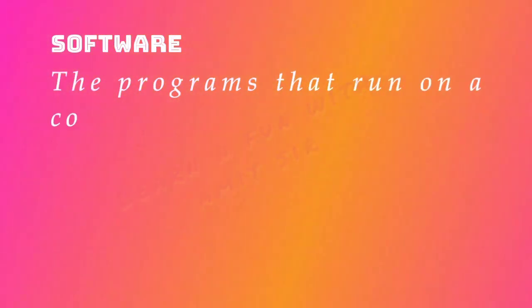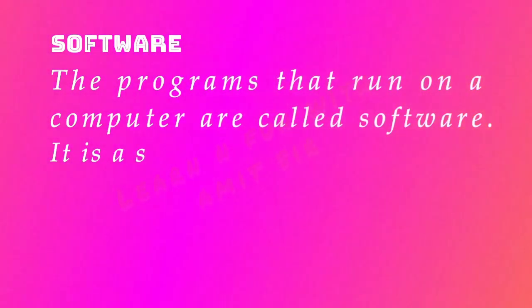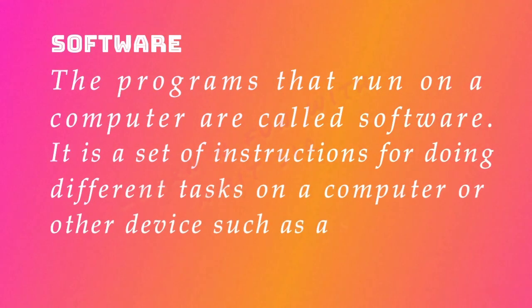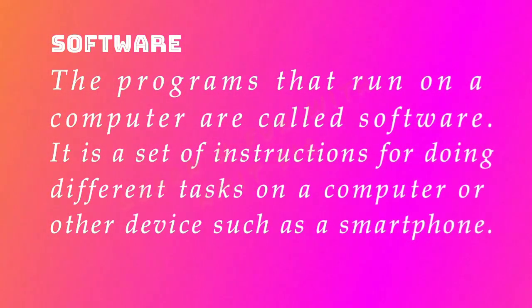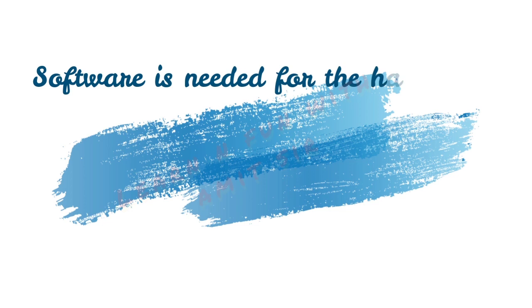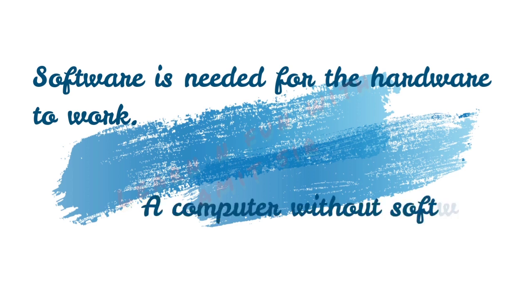While software is a program that runs on a computer. It is a set of instructions for doing different types of tasks on a computer or other devices such as a smartphone. It enables the user to interact with the computer and its hardware to perform a particular task. It is a bridge between the user and the computer hardware. Therefore, software is needed for the hardware to work. Without software, most computers would be useless.